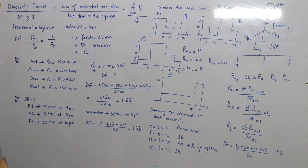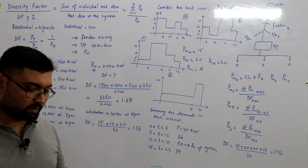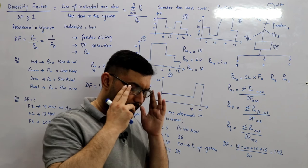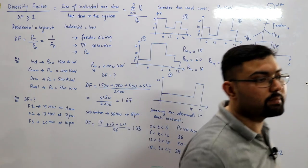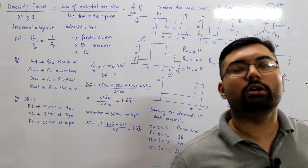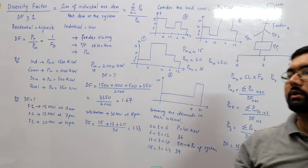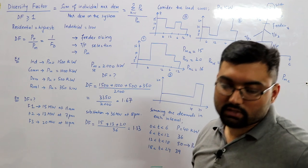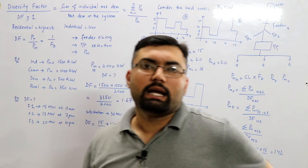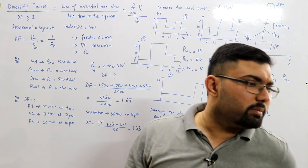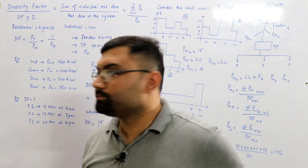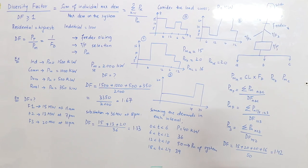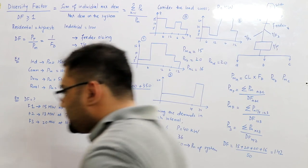Residential loads have the highest diversity factor because their peaks tend to coincide at the same time — most probably in the evening hours — since consumers share the same habit of using electricity.